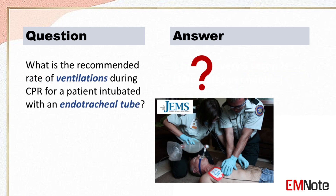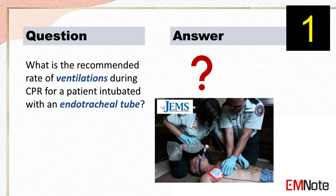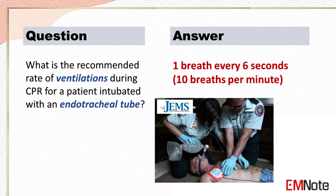What is the recommended rate of ventilations during CPR for a patient intubated with an endotracheal tube? The recommended rate is 1 breath every 6 seconds, or 10 breaths per minute.